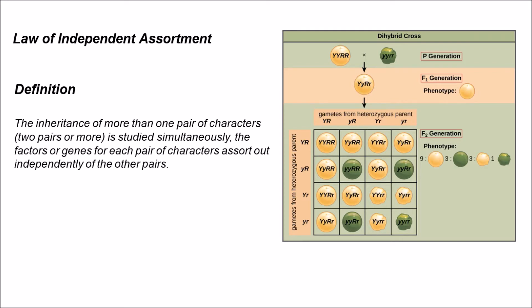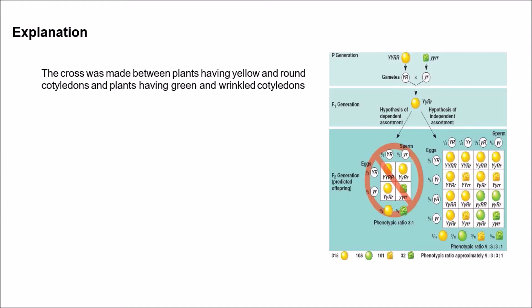Mendel formulated this law from the results of a dihybrid cross, which is why the law of independent assortment is also called the dihybrid cross law. Coming to the explanation part: